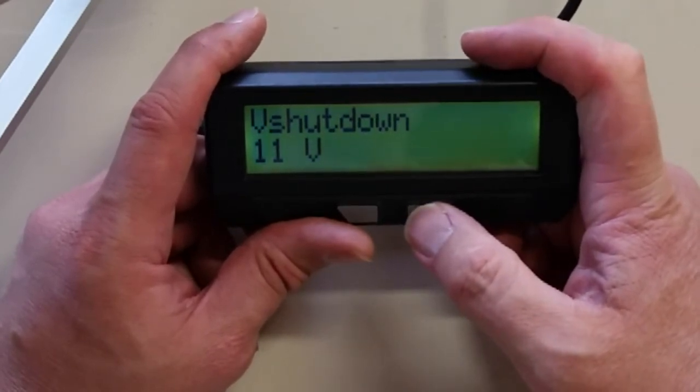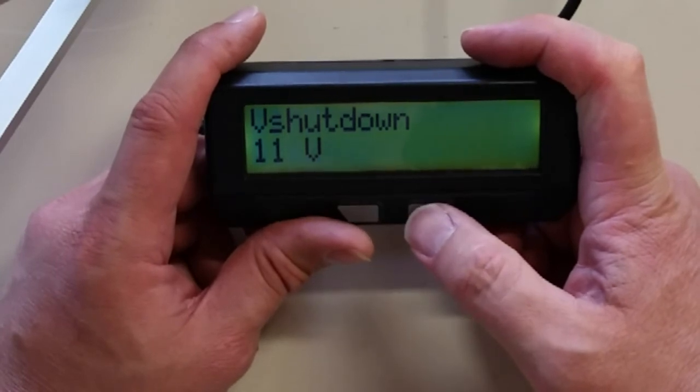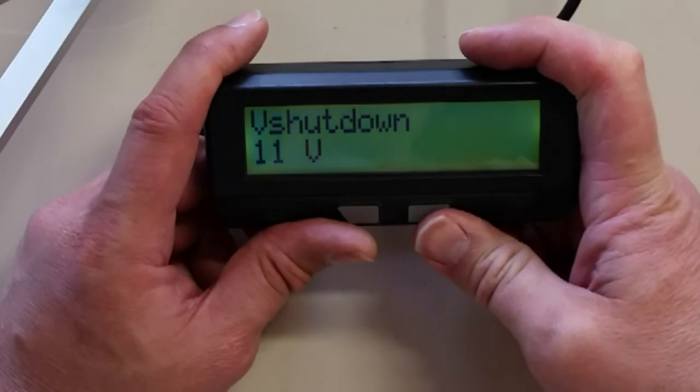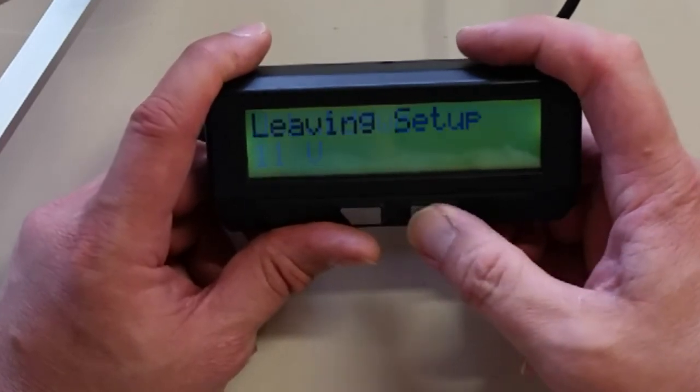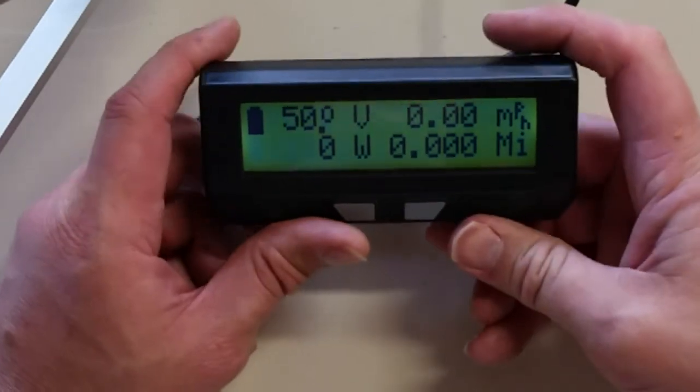And I usually don't change the rest of these. The voltage shut down just tells you at what voltage the cycle analyst shuts down. Most of the time you're not going to be running less than eleven volts. I usually leave that where it is as well. And there's your setup.